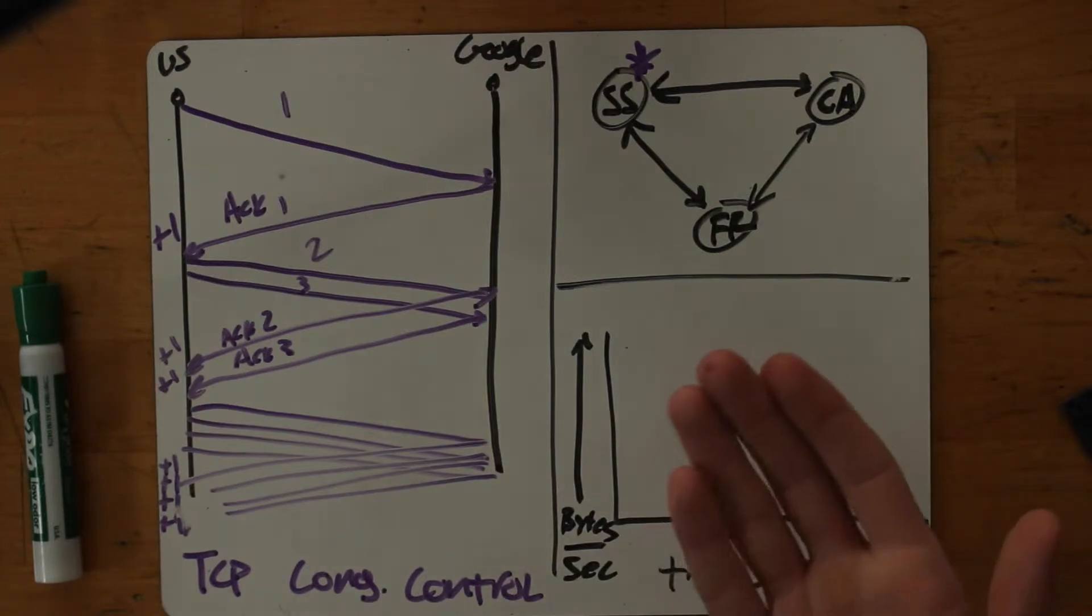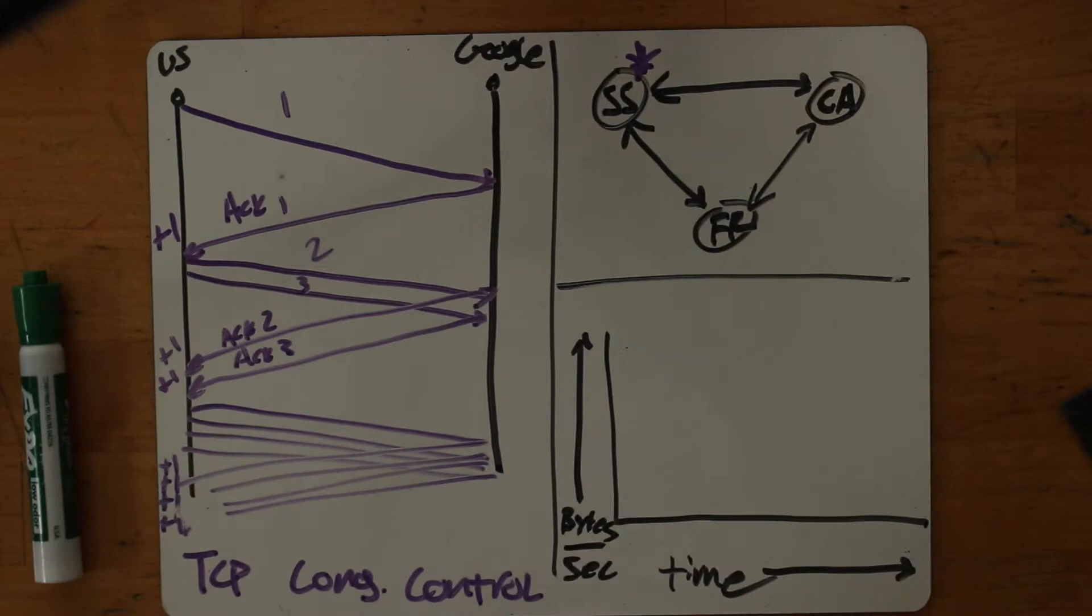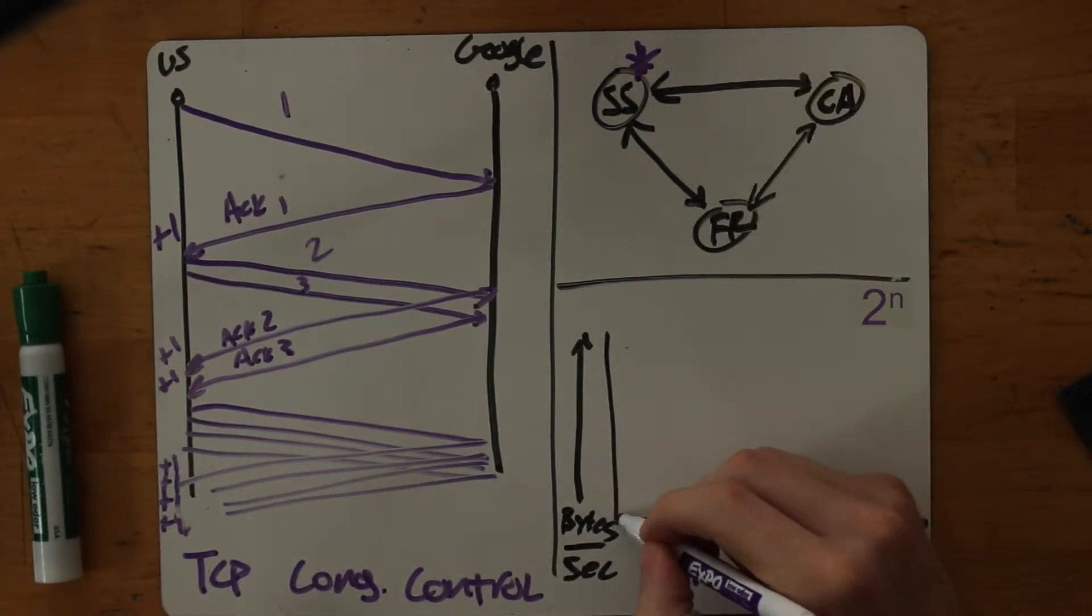So this is exponential growth. First I sent one, then two, then four, then eight, then 16, then 32. So this is just the two to the n exponential function during slow start. And it looks like this. And I do this until one of two things happens.